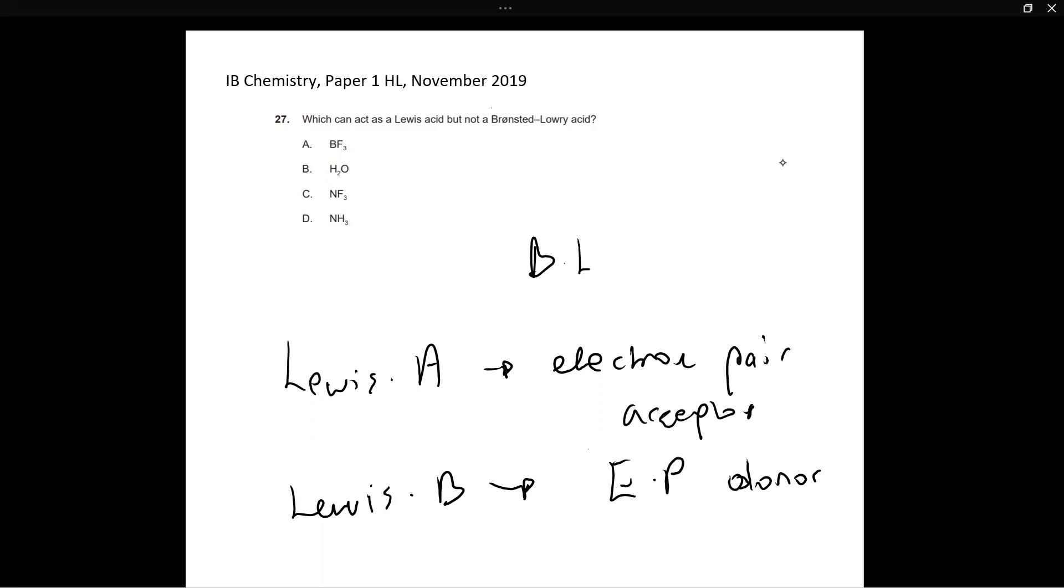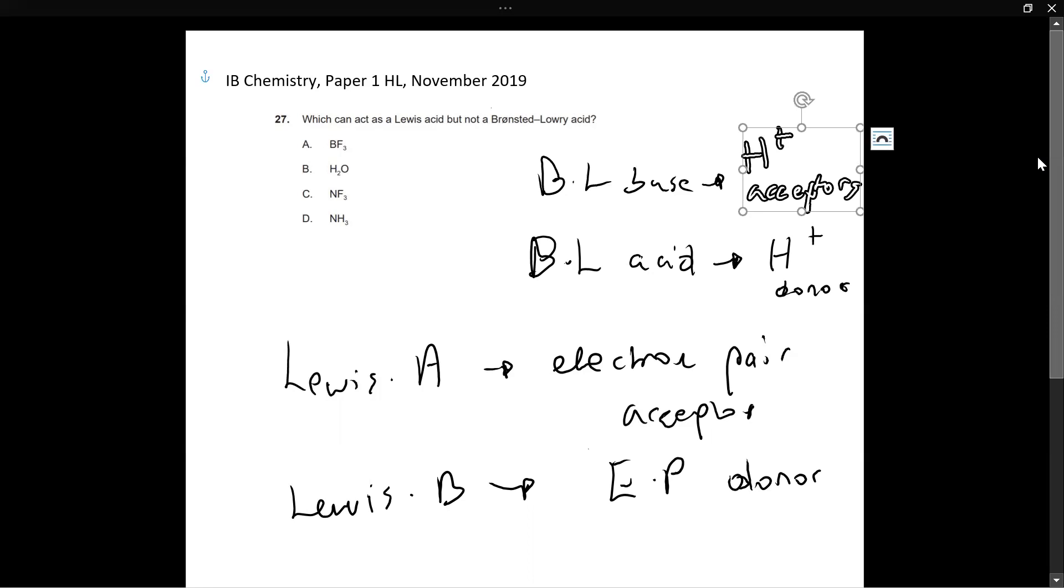So what is a Bronsted Lowry acid? I'm just, BL is Bronsted Lowry. A Bronsted Lowry acid is an H plus donor. So it donates a proton and a Bronsted Lowry base is an H plus acceptor. So it accepts an extra hydrogen or an extra H plus.